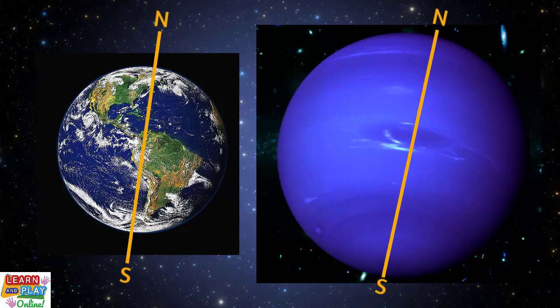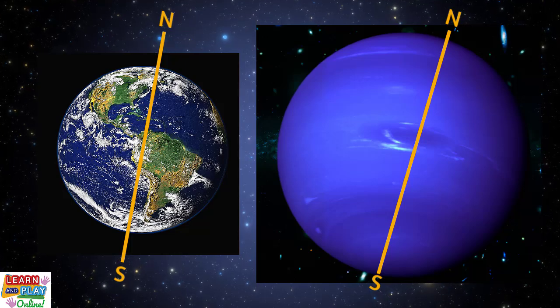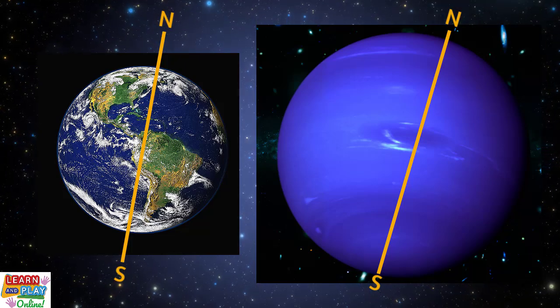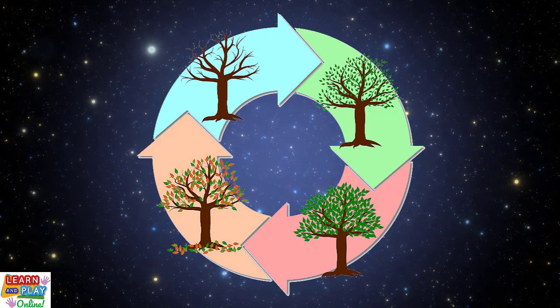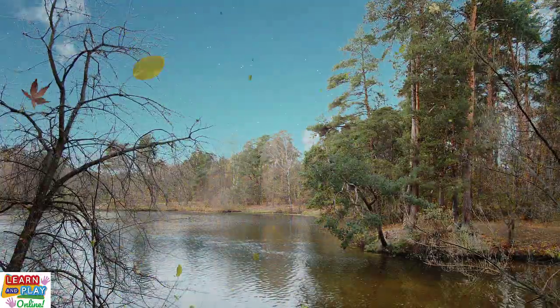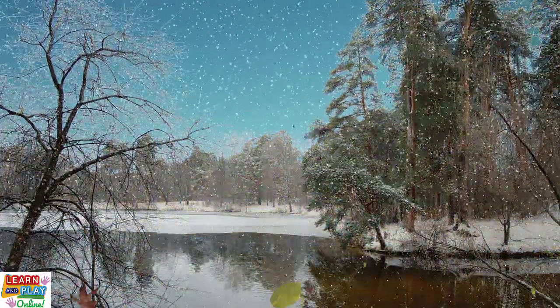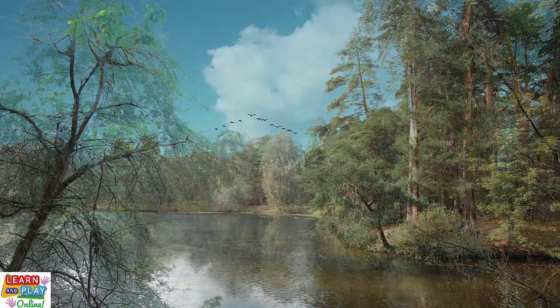Now if we tilt the axis, the planet will continue to turn, but slightly on its side. Earth and Neptune have similar tilts, which is why we experience the same seasons. Summer, autumn, winter, and spring. Here on Earth, each season lasts for three months. But on Neptune, since it takes so long for the planet to orbit the Sun, each season lasts for over 40 years.